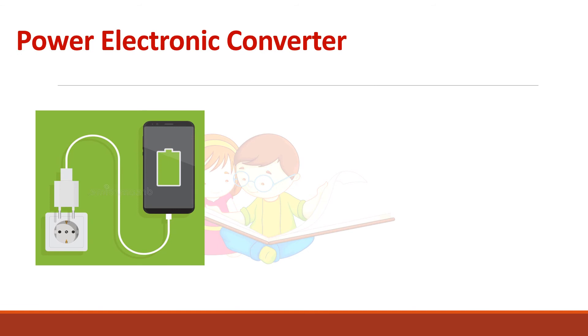The best example of a power electronic converter is a mobile charger. The battery needs DC power, but we have AC power available from the supply.